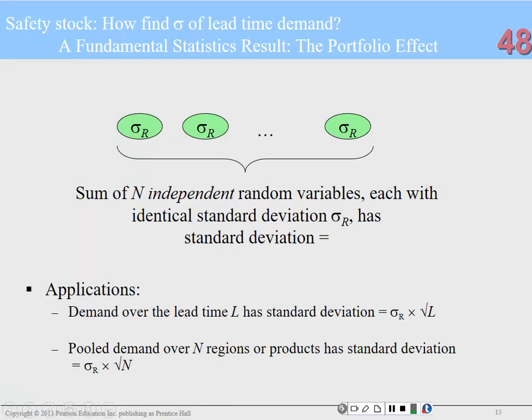Here's another important concept: demand over the lead time has a standard deviation equal to the standard deviation of demand times the square root of the lead time. For one day, it's just the standard deviation of demand; for two days, it's the standard deviation times the square root of two. The concept I want you to get is pooled versus regional demand.